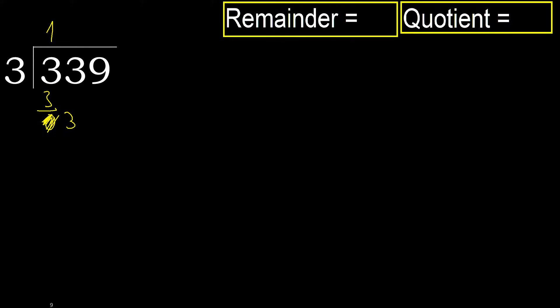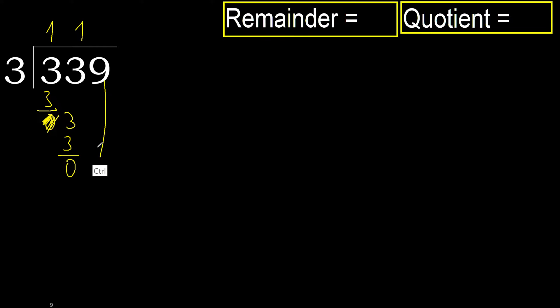Bring down 3 on this side. 3 multiplied by 1 is 3 — it is not greater. Subtract. Next.